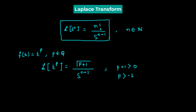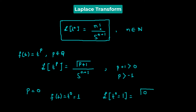For example, if we consider p equals zero, which is a rational number, then f(t) equals t^0 which is 1. The Laplace transform of t^0 equals the gamma function of 0 plus 1 divided by s raised to the power of 0 plus 1, which gives gamma(1) divided by s.